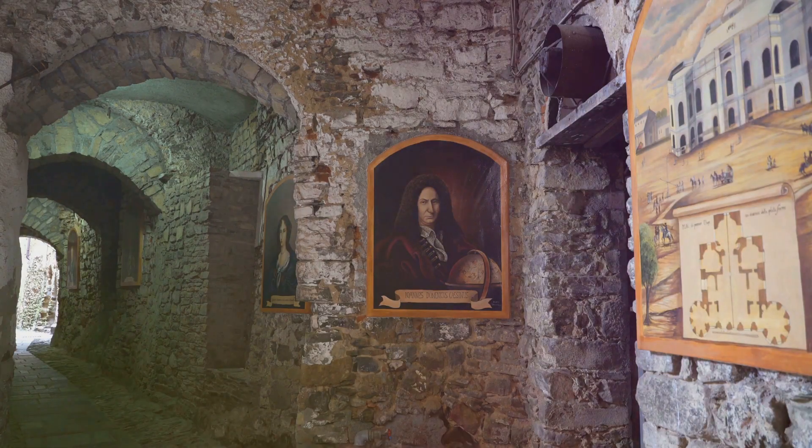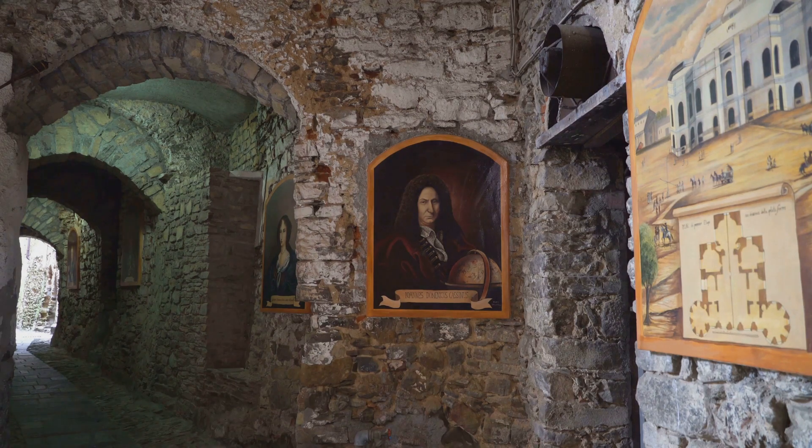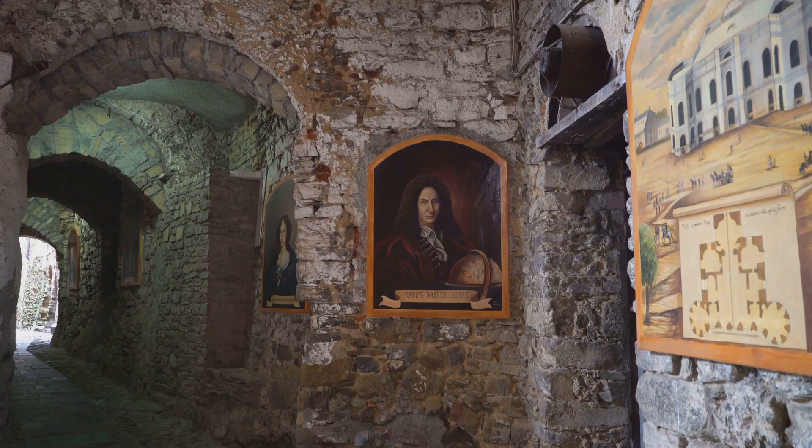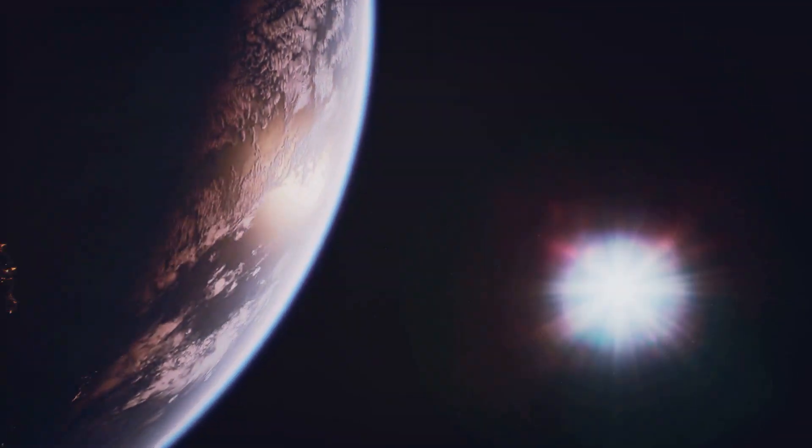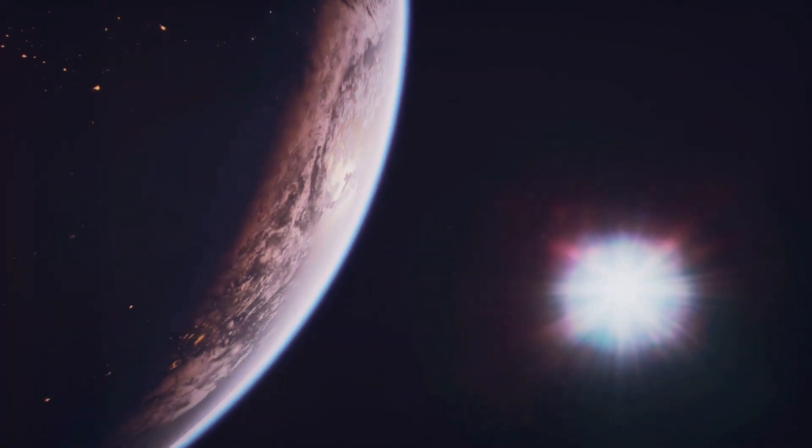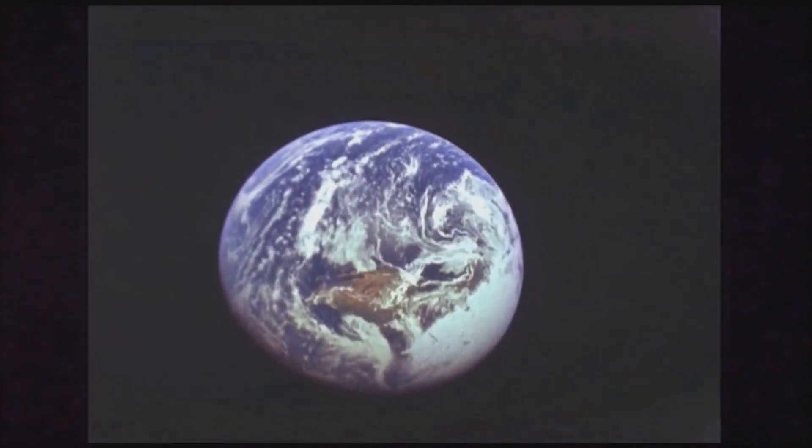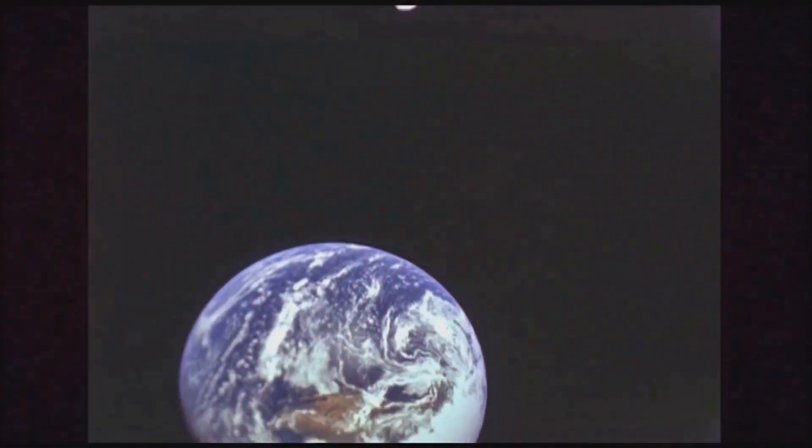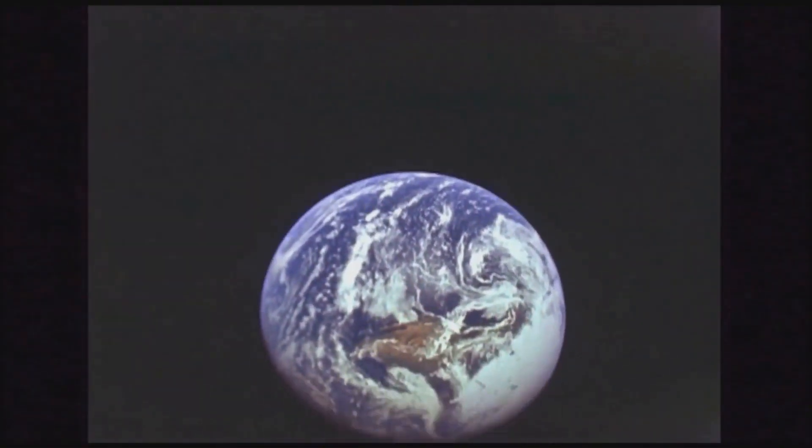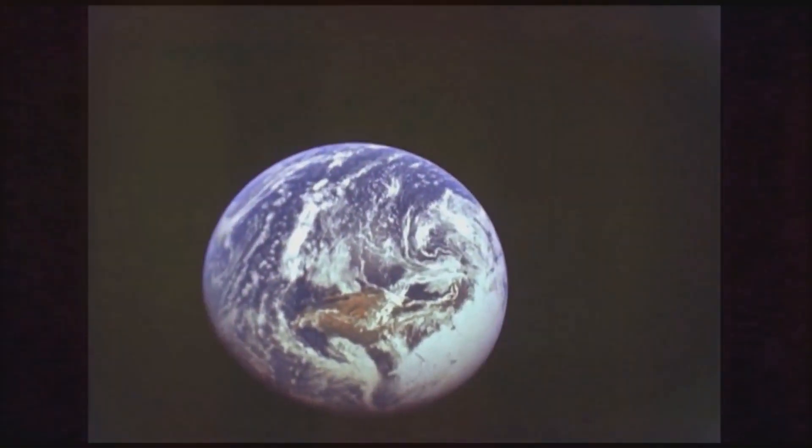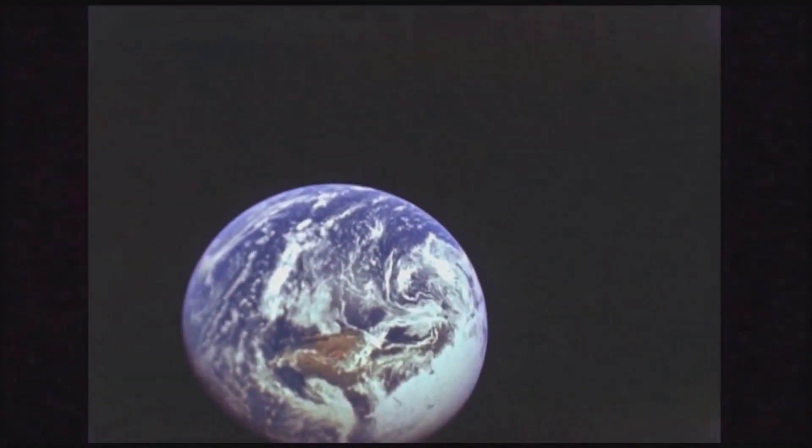The Copernican Principle, named after the 16th-century Polish astronomer Nicholas Copernicus, holds that humans are not privileged observers of the universe. As Wikipedia states, the Copernican Principle states that humans, on the Earth or in the solar system, are not privileged observers of the universe, that observations from the Earth are representative of observations from the average position in the universe.